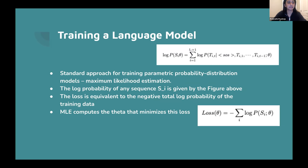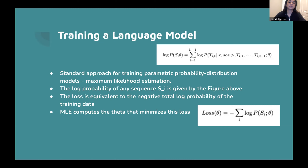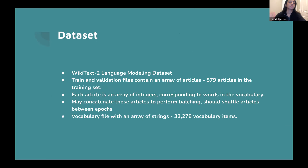To train the network, we use maximum likelihood estimation — the standard approach for training parametric probability distribution models. We highly recommend reading the write-up for the theory behind MLE. The log probability of any sequence s_i is given by a sum, and we minimize the loss function equivalent to the negative total log probability of all training data. MLE finds the theta that minimizes this objective function.